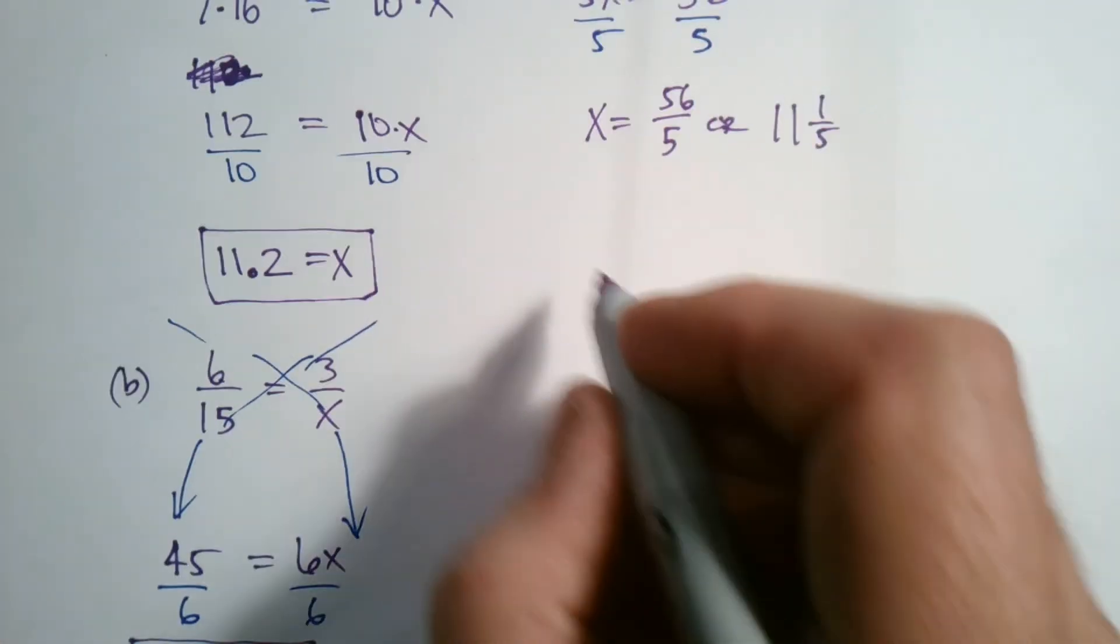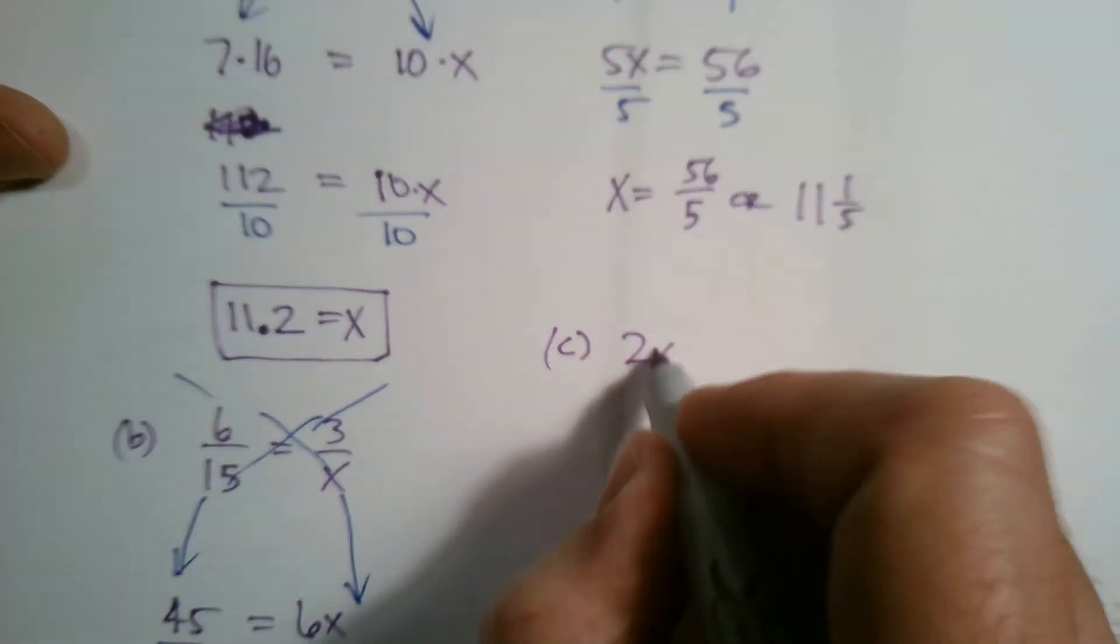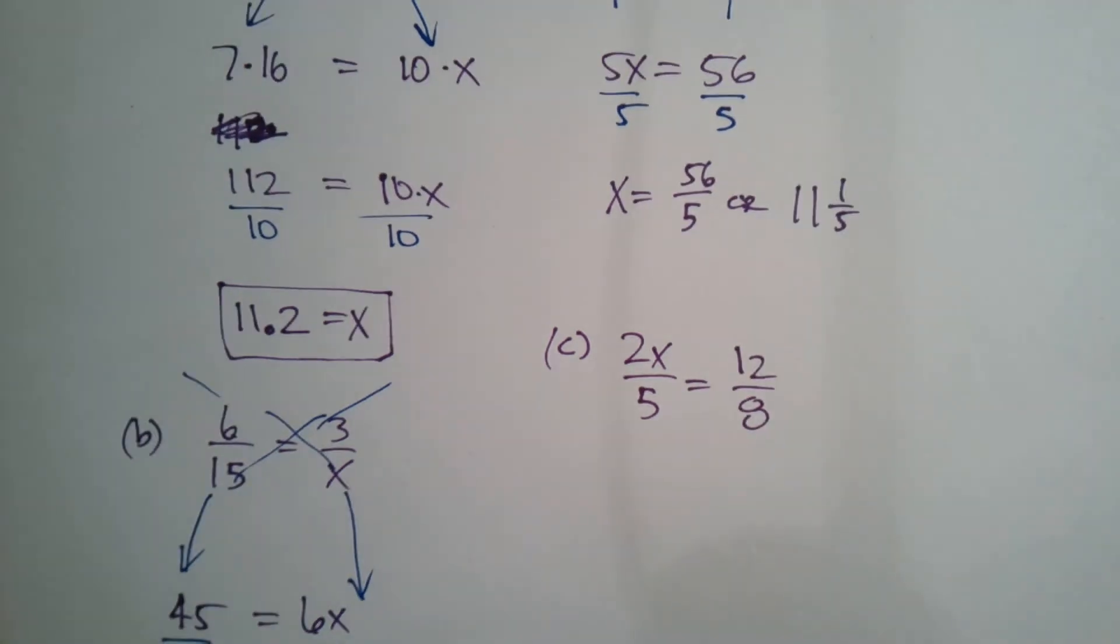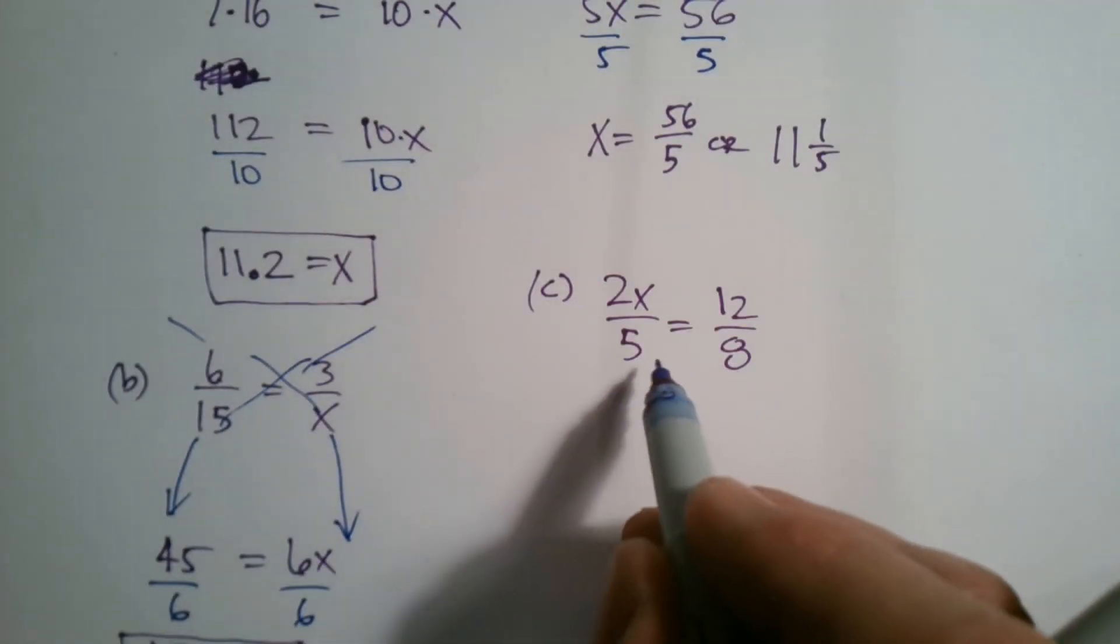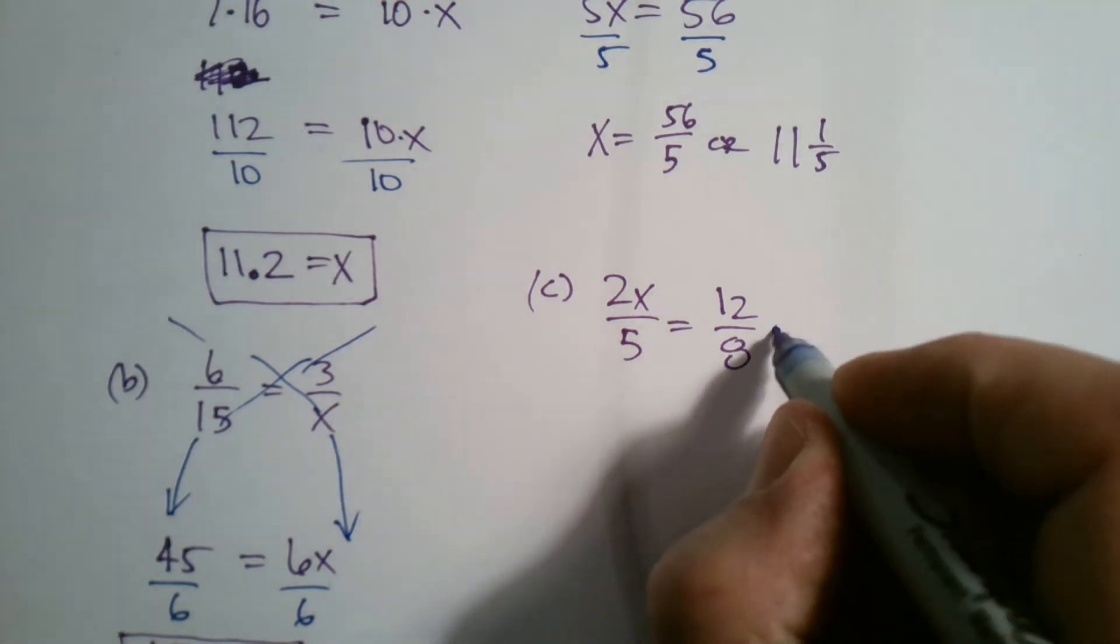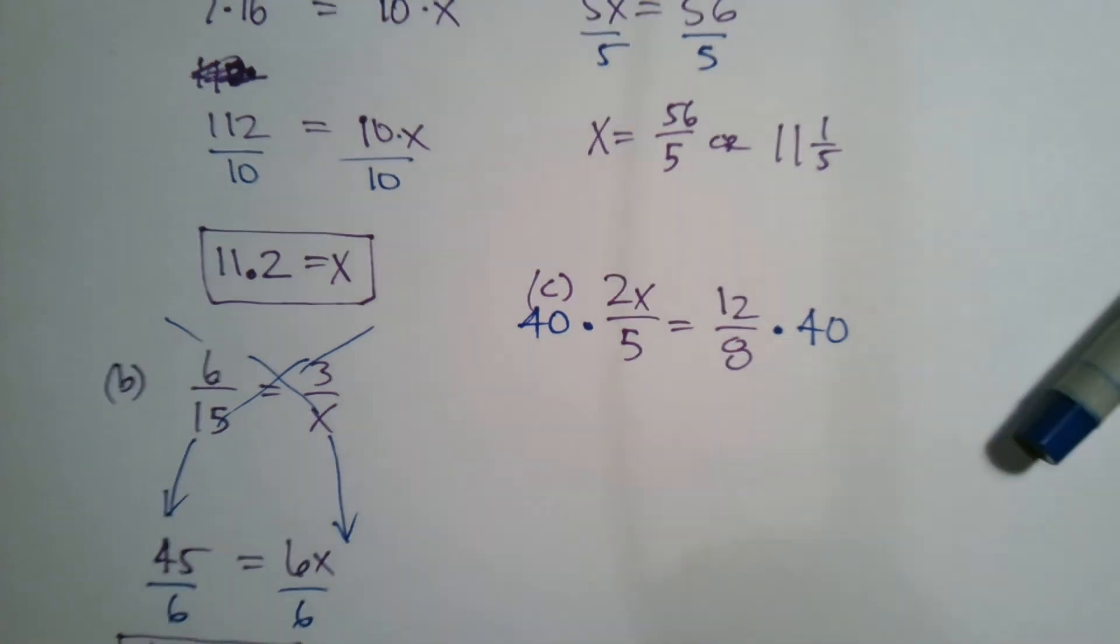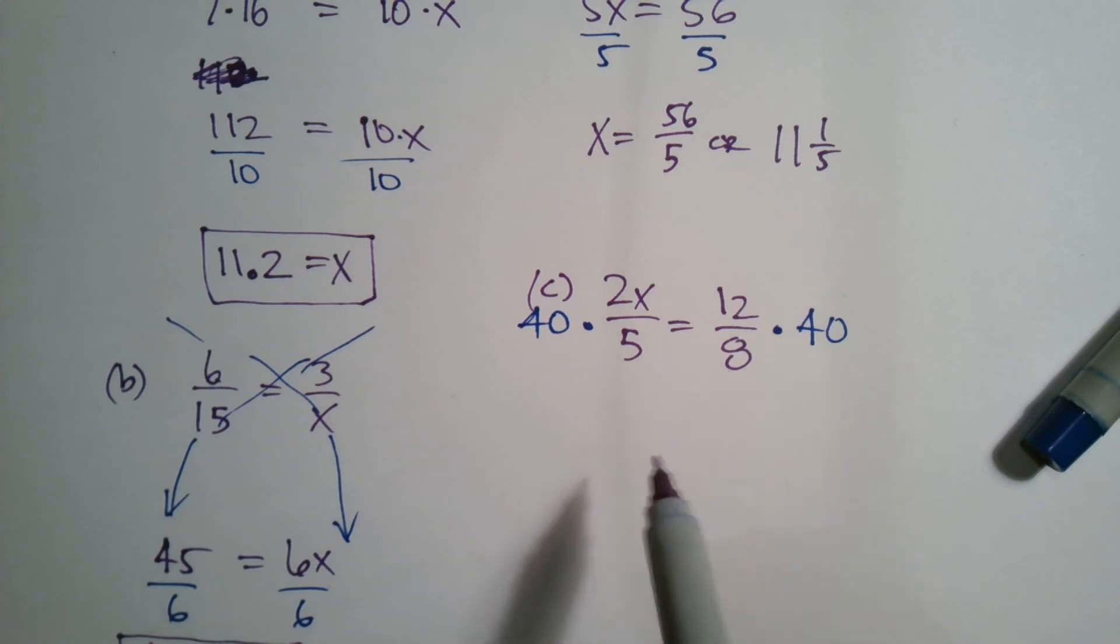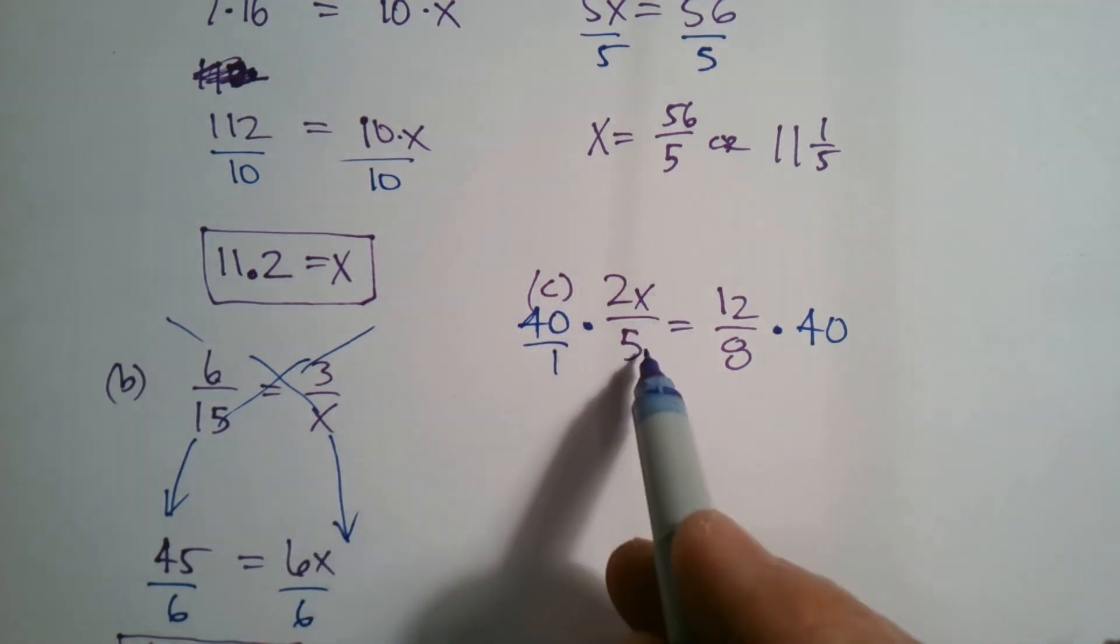So there's B. C, with C—C I'll rewrite. C is two X over five is equal to 12 over eight. In this case, I'm going to use fraction busters just so we can see that one, right? Fraction busters. What would be the common denominator with the five and the eight? Well, that would be 40. I would multiply both sides by 40, excuse me. Right? The denominators five and eight both go into 40.